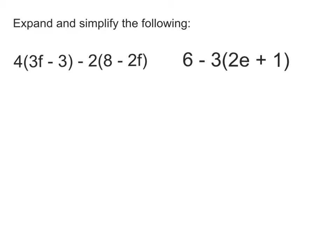Let's evaluate these expressions. The first thing I'm going to do for this first one is multiply out the brackets. We're going to get 4 times 3f. Well, that's 12f. And we're going to get 4 times negative 3. Well, that's negative 12.